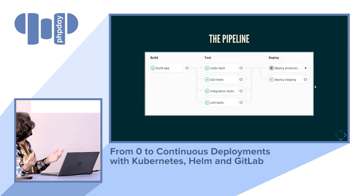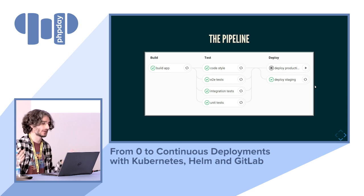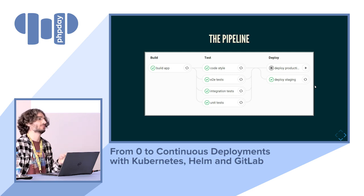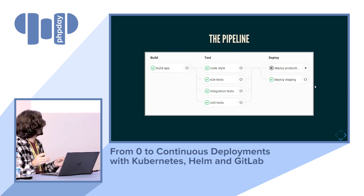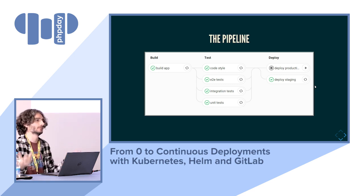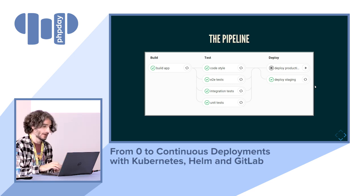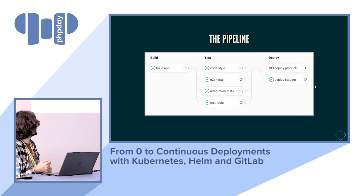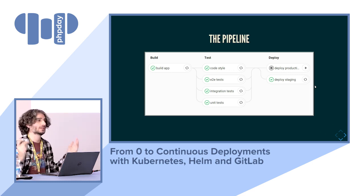What we're going to build is a continuous integration pipeline. A pipeline is a set of subsequent steps where each stage blocks the subsequent ones — it only moves forward, never backward. If any job fails, the whole pipeline halts. This can be done automatically with services like Travis, Semaphore, or CircleCI. Today we're going to use GitLab, because it's the one I'm most used to.